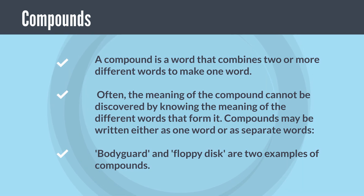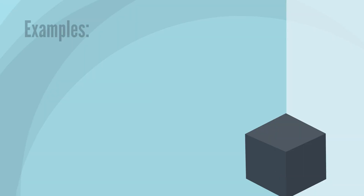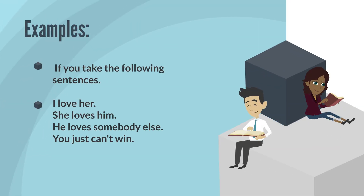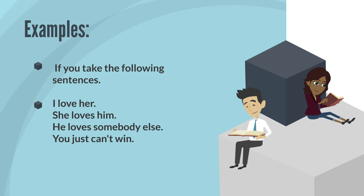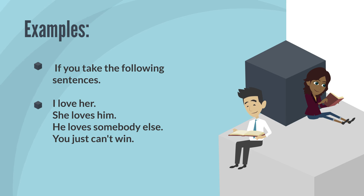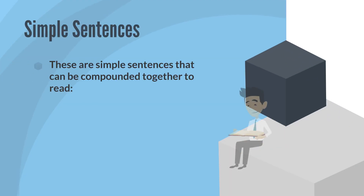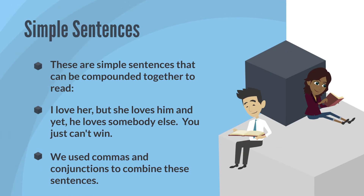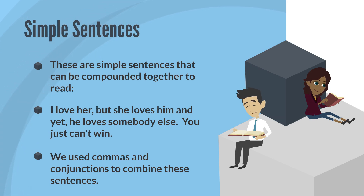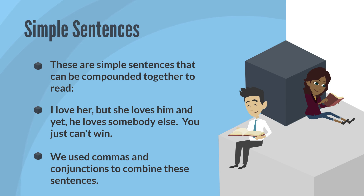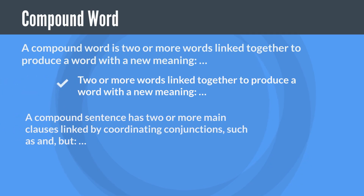For example, take the following sentences: 'I love her. She loves him. He loves somebody else. You just can't win.' These are simple sentences that can be compounded together to read: 'I love her, but she loves him, and yet he loves somebody else — you just can't win.' We used commas and conjunctions to combine these sentences.